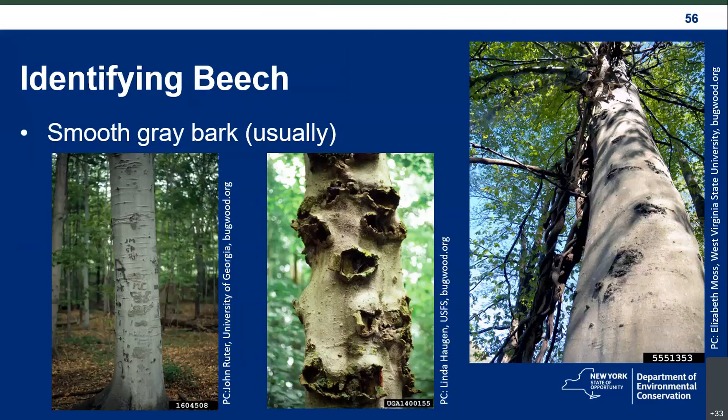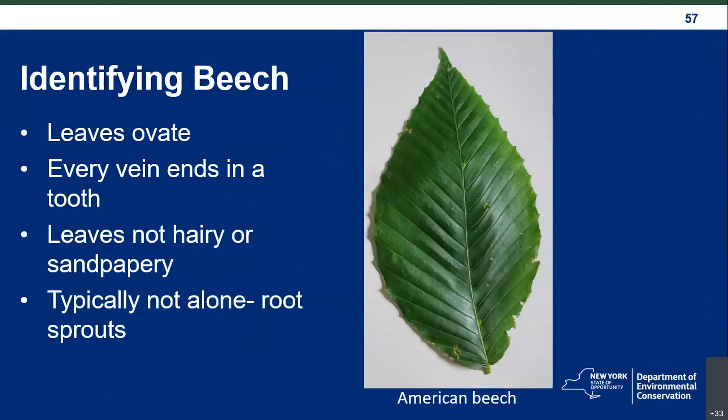Once you've identified a tree with bark that looks like beech, look for the leaves next. The leaves are ovate, which just means they're oval shaped. A good trick is that every vein ends in a tooth and every tooth is associated with a vein. The leaves also aren't hairy or sandpapery — some other trees with ovate leaves will feel a little texture when you grab them, but beech leaves just feel like a leaf.